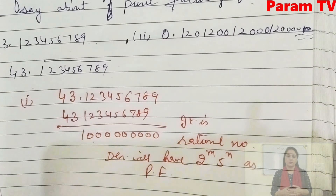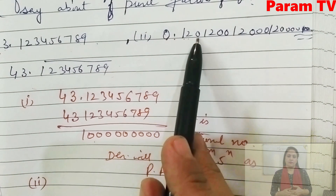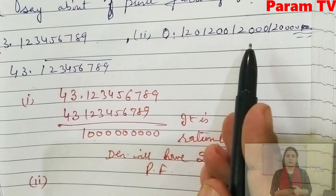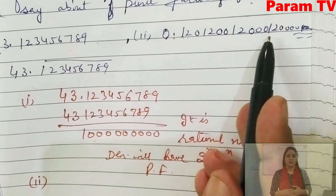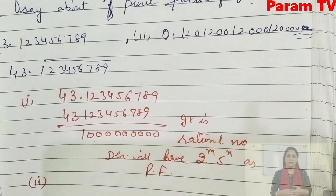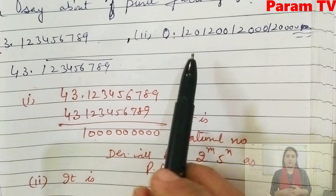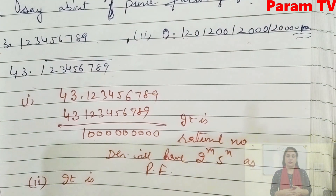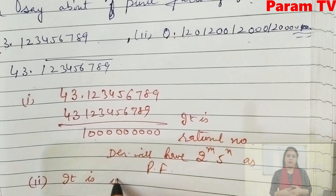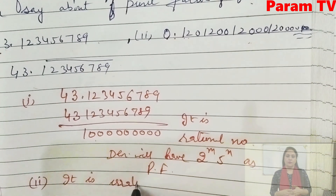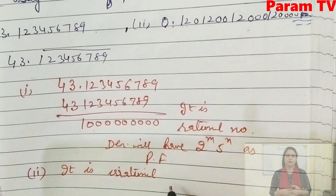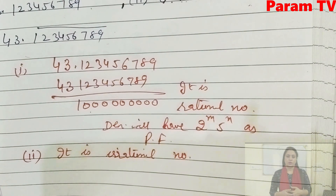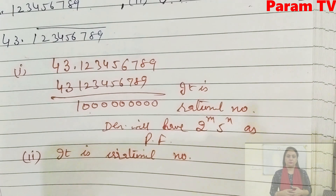Next is 0.120120012000120000… and so on. It is neither repeating nor terminating — it is irrational. When it is irrational, we don't need to say anything about its denominator.